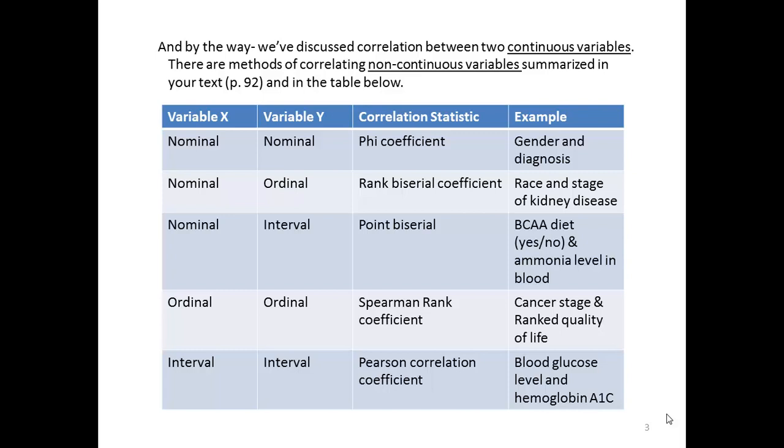If we wanted to know if there was a relationship between a nominal and ordinal variable, we would use rank by serial. An example would be race and a stage of kidney disease. If we wanted to know if there was a relationship or a correlation between a nominal variable and an interval level, meaning we have one that's categorical and the other one that is continuous, we would use point by serial.